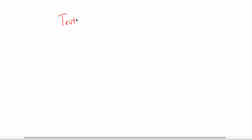Hi everyone. I got a question about truth tables and I figured I'd make a quick video giving a little tutorial. The reason why is because I think this is a topic that gives students a lot of trouble. I know it is - I've taught this class enough to know. But it's not as hard as it seems once it clicks. Once you get the hang of it they're actually pretty easy, but it takes a while to get there, so I thought maybe a little video tutorial would help people out.